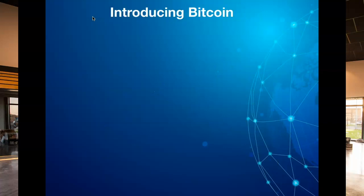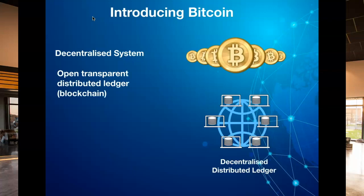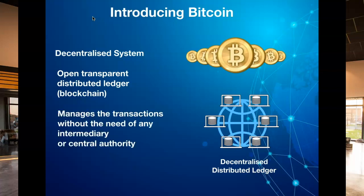Then came Bitcoin, which was first introduced through a white paper in 2008, which proposed a decentralized system that basically tries to solve the double spend problem through an open, transparent, distributed ledger called blockchain, that records and manages transactions without the need of any intermediary or central authority.